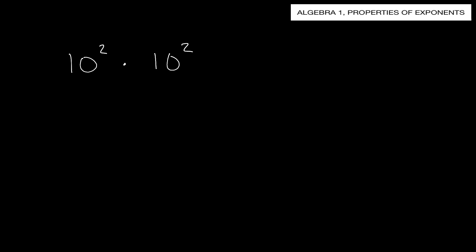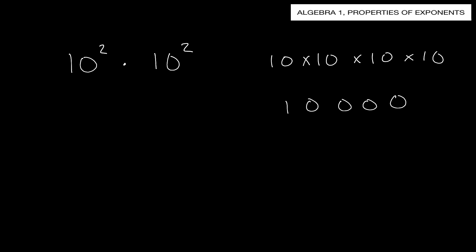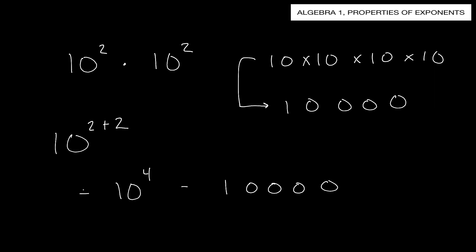Maybe with numbers I can show you this. If I have 10 squared times 10 squared, think about this: 10 squared is 10 times 10, times another 10 times 10. What do we have? 1 followed by 4 zeros - 10,000. Now using the rule: 10 squared times 10 squared, we add the exponents - 2 plus 2 - because we have a similar base, base 10, being multiplied together. So we get 10 to the fourth power, which is a 1 followed by 4 zeros. You can see these equal out.